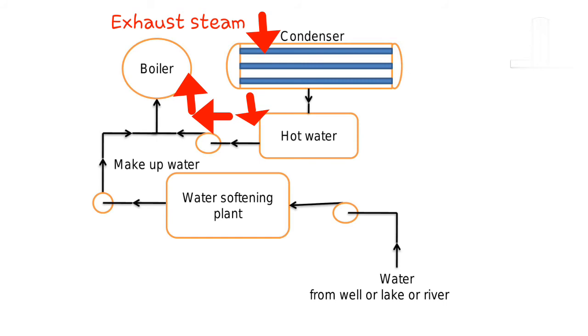Water from the well, lake, or river is passed to the boiler through the water softening plant.